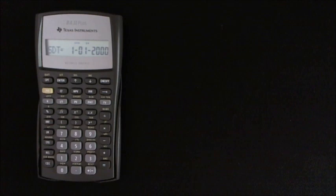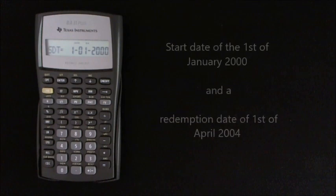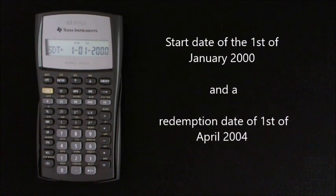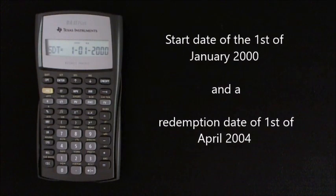The calculator requires a settlement date and a redemption date. If you have these, you can enter them. But for the purpose of this question, we can simulate four years and three months by entering a start date of the 1st of January 2000 and a redemption date of the 1st of April 2004.